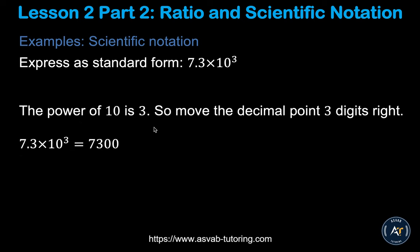Now let's learn how to convert from scientific notation back to standard form. Take 3.7 times 10 to the third power. The exponent 3 means there should be three digits after the decimal position. Count one, two, three — and if you don't have enough digits, fill in with zeros. So 3.7 times 10 to the 3rd becomes 3,700.